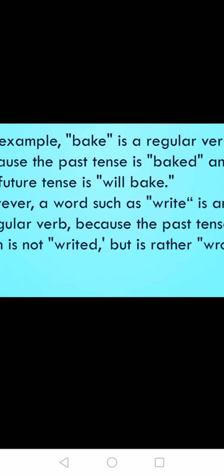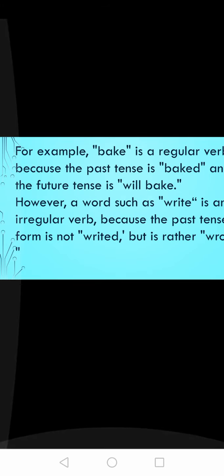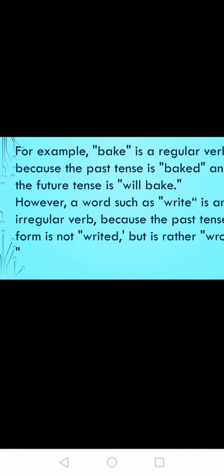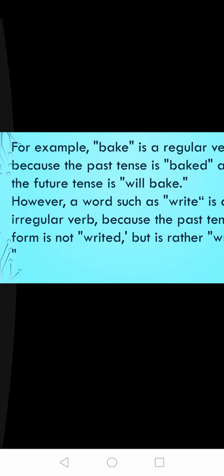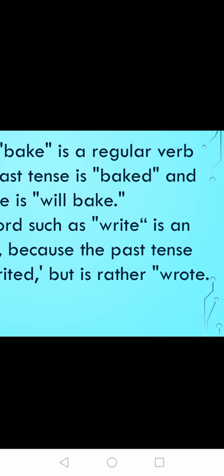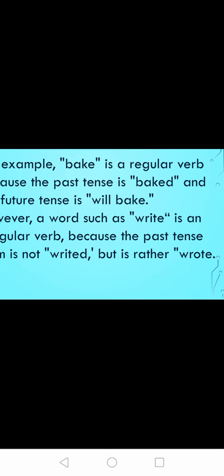For example, bake — B-A-K-E. How do you know that bake is a regular verb? Because the past tense of bake is baked — B-A-K-E-D. The last letters are -ed, and since the letter E is already there, we just add D. So baked is a regular verb, and the future tense is will bake. However, a word such as write — the past tense of write is not writeed, it is wrote. So write is not a regular verb; write is an irregular verb.